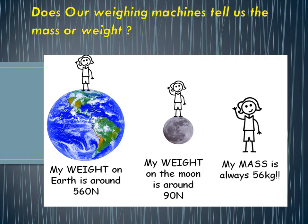Dear students, the most frequently asked question is: does our weighing machine tell us the mass or weight? In this picture, we observe that the person's weight on Earth is around 560 Newton, but the same person when he measures his weight on the Moon, it is around 90 Newton, but his mass is always 56 kg.